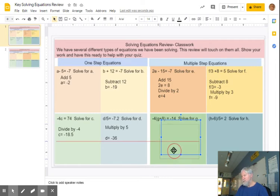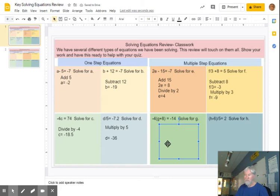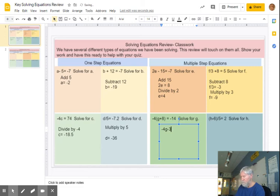When you have parentheses, like you do here, and I see that negative 14 is not evenly divisible by negative 4. So I'm going to multiply this out. So I'm going to go negative 4G. And negative 4 times 8 is 32. So negative 32. And that's going to equal the negative 14.